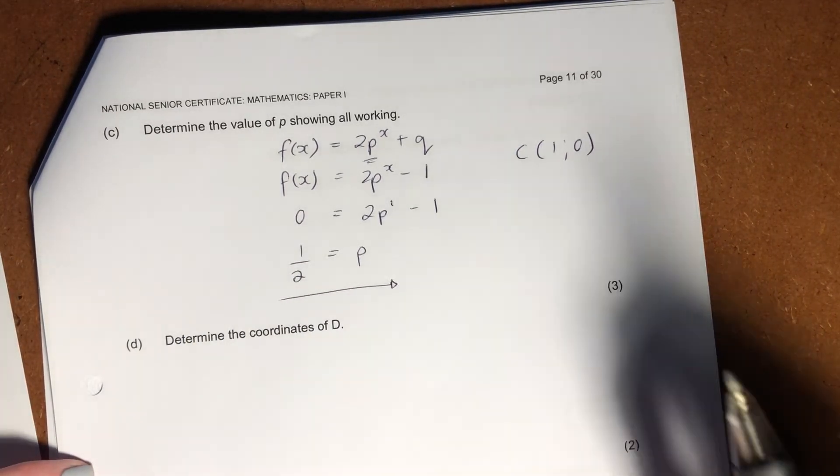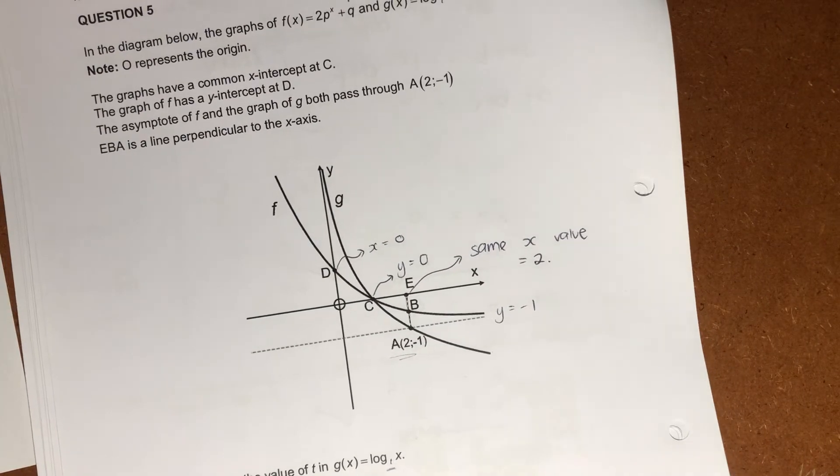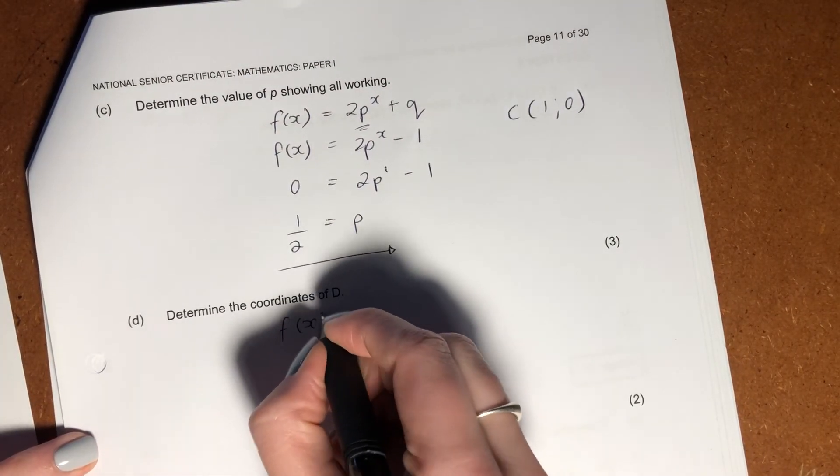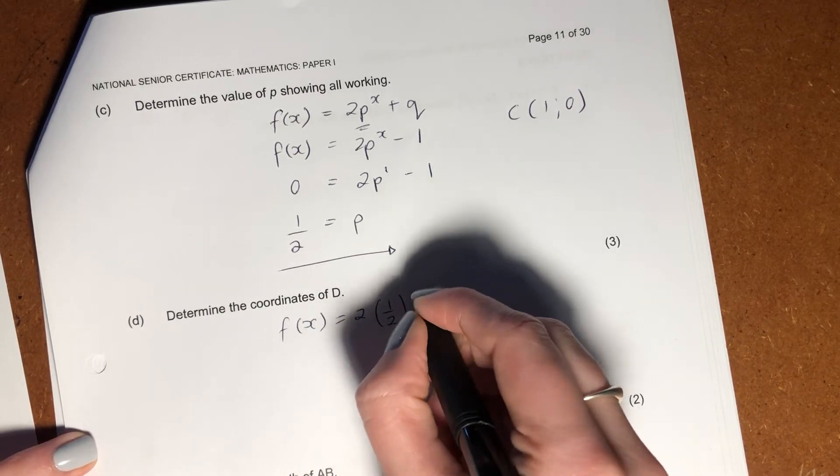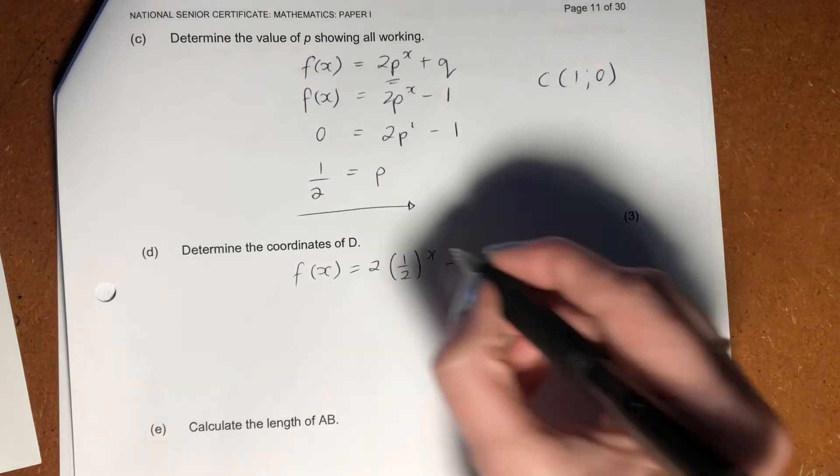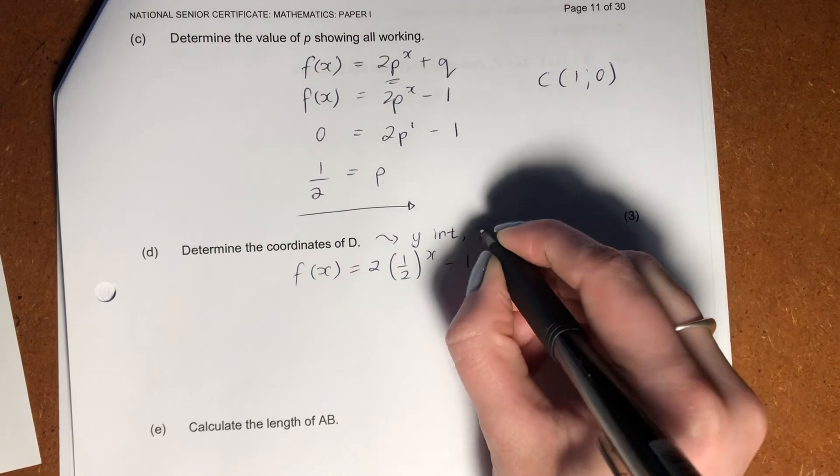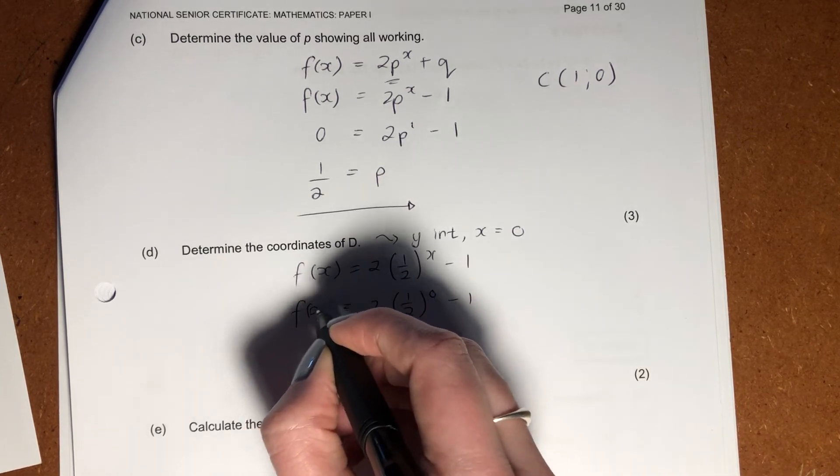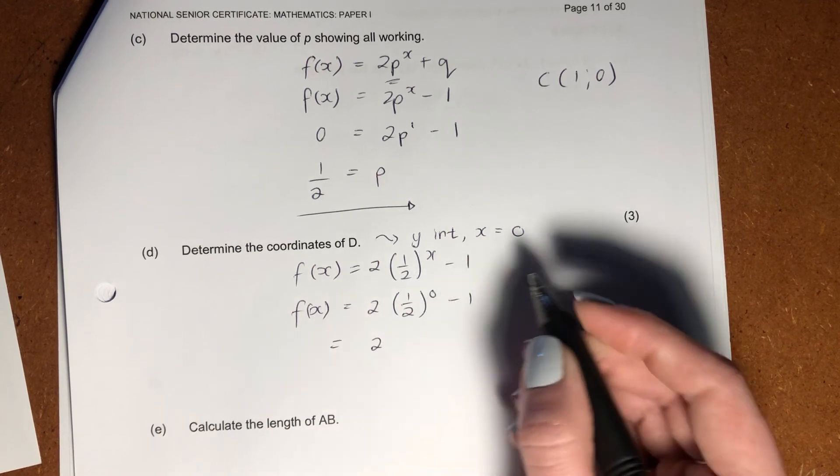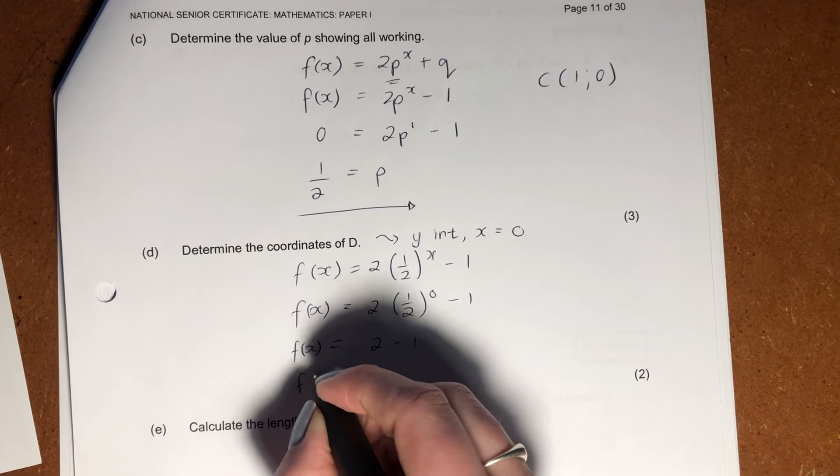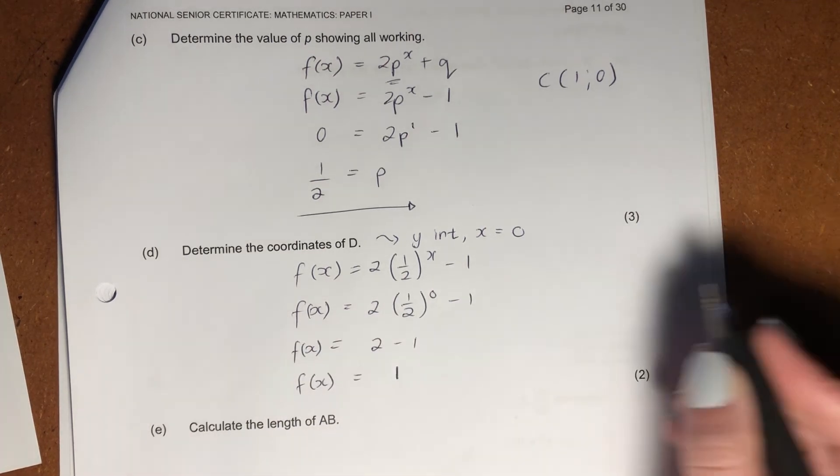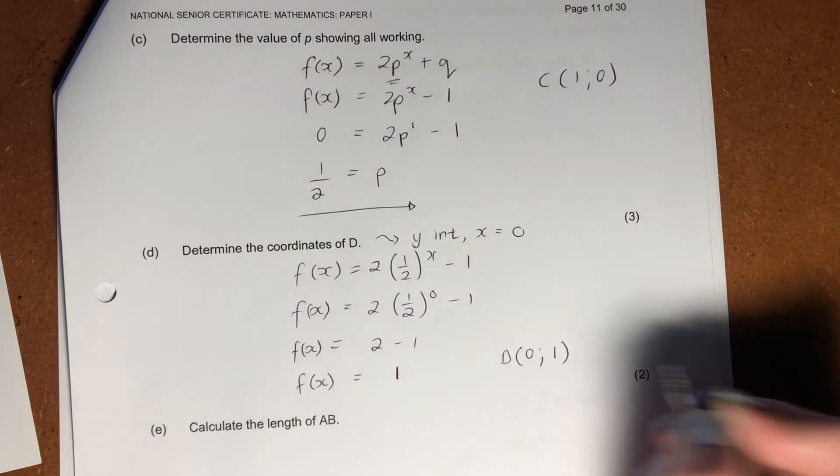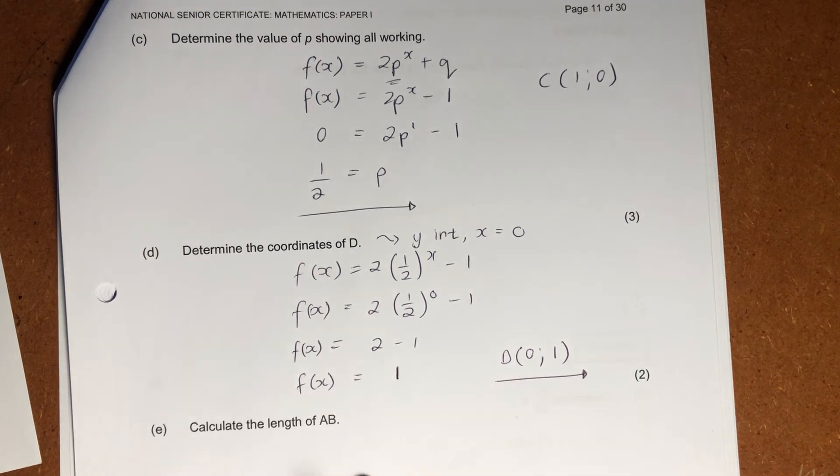It then says, please determine the coordinates of d. So let's go and see where d is. d is just the y-intercept of my f-graph. So we know that my f-graph equals this. I'm just subbing in my p-value that I've worked out. So d is effectively, what did I say it was? My y-intercept. And my y-intercept, x equals 0. So put that in. You literally just solve that. That's going to become 2 because anything to the power of 0 is 1. And we can see that that's going to equal 1. So my coordinates of d are 0 and 1. Please make sure that you write out the coordinates. You don't just find this f(x) value and leave it like that. It's specifically asked for the coordinates.